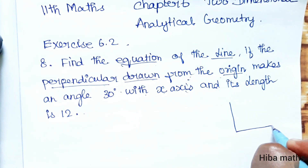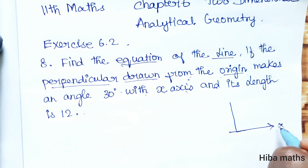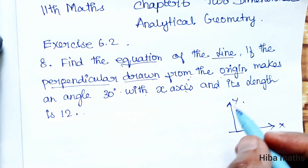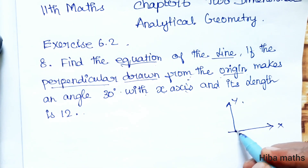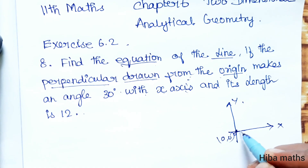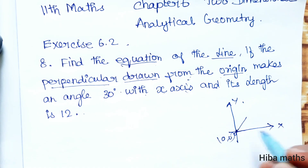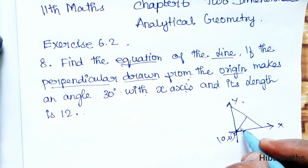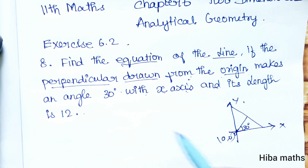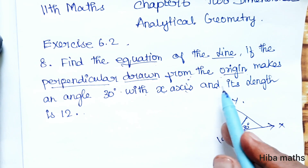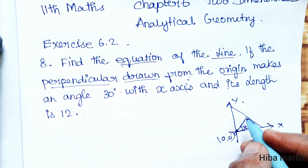If you draw the axis, this is x and this is y. If you draw the perpendicular from the origin, the origin is (0, 0). The perpendicular line meets the x-axis at an angle of 30 degrees, and its length is 12.